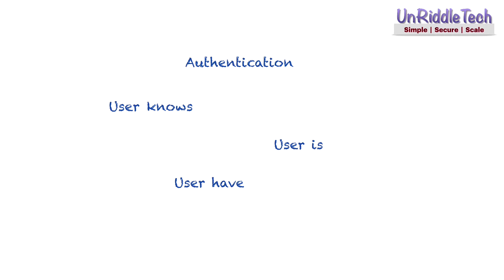Applications use at least one of these methods to verify user identity. Most applications ask for username and password — authentication based on what you know. To enhance security, you may configure applications to use more than one method or factor for verifying users. For example, you may first verify username and password, then also check user identity by asking another factor based on what the user has.